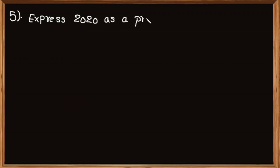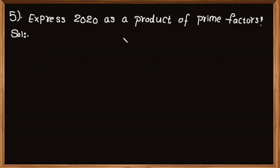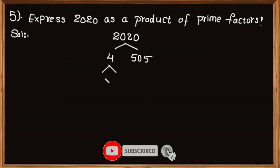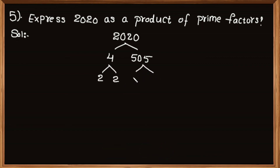Problem number 5: Express 2020 as a product of prime factors. In this problem we have to factorize 2020 as a product of prime factors. 2020 can be written as product of 4 and 505. Again 4 can be written as product of 2 and 2. And 505 can be written as the product of 5 and 101.